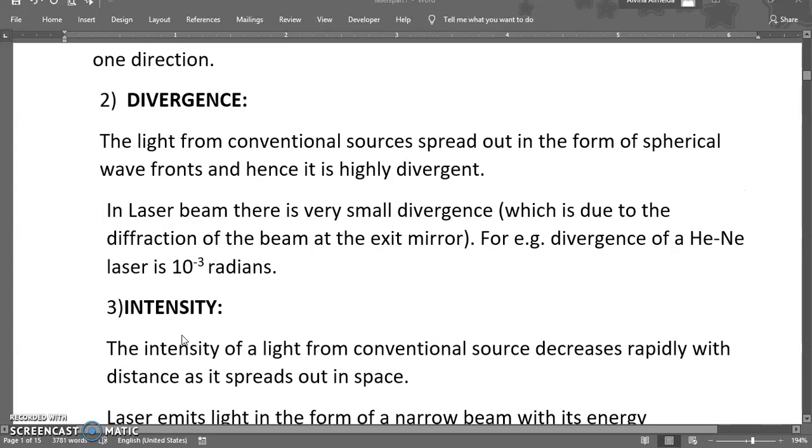Next we'll see is divergence. The light from conventional sources spread out in the form of spherical wavefront and hence it is highly divergent. Whereas in case of laser there is a very small divergence which is due to the diffraction of the beam at the exit mirror and it is very small. For example in case of helium neon laser the divergence is 10 raised to minus 3 radians.